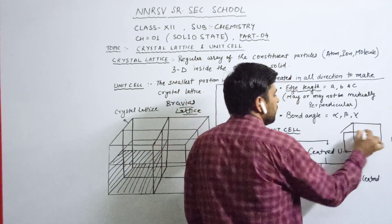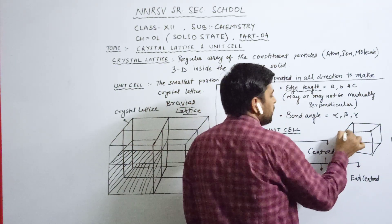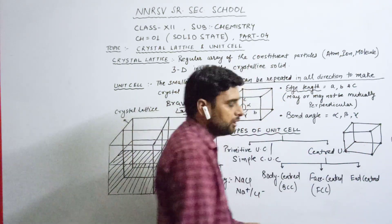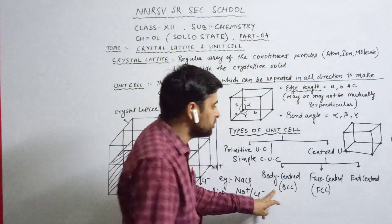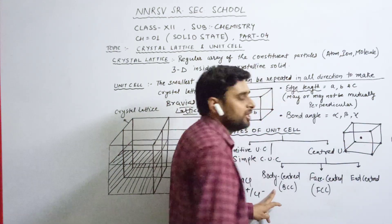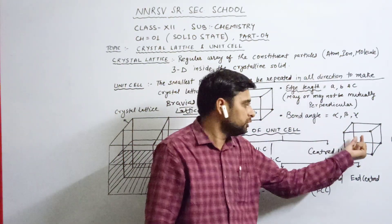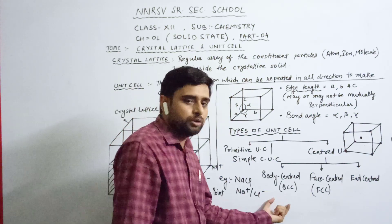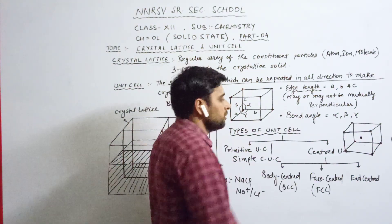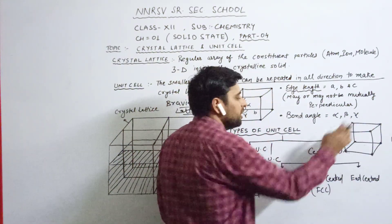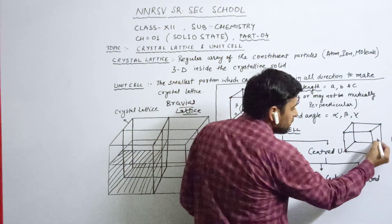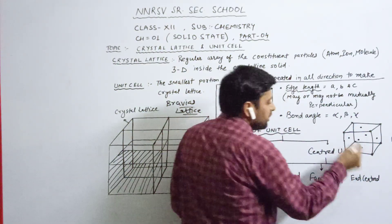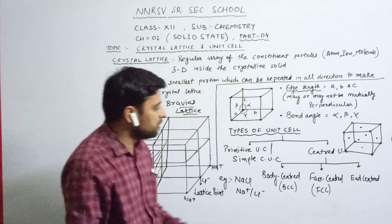In the centered unit cell, eight atoms are present at the corners, but it is classified into three types. In BCC (body-centered cubic), one atom is present at the center in addition to the eight atoms at the corners. In FCC (face-centered cubic), eight atoms are at the corners and six atoms are present at the centers of the six faces.